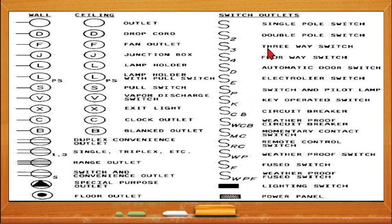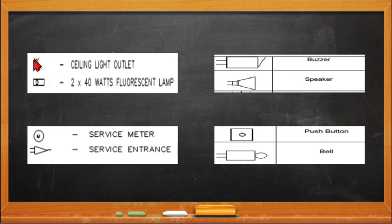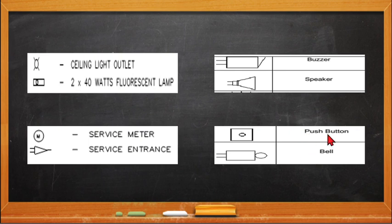The switches are mounted on the wall. The symbols for switches include single pole, double pole, three-way, and four-way, and so on. Then there are the symbols for the lighting panel and the power panel. For lights, you have the ceiling light — commonly used for incandescent or CFL — and a separate symbol for fluorescent lamp. Then the service meter or kilowatt-hour meter, the service entrance, the buzzer, the speaker for intercom, the push button or doorbell button, and the bell.